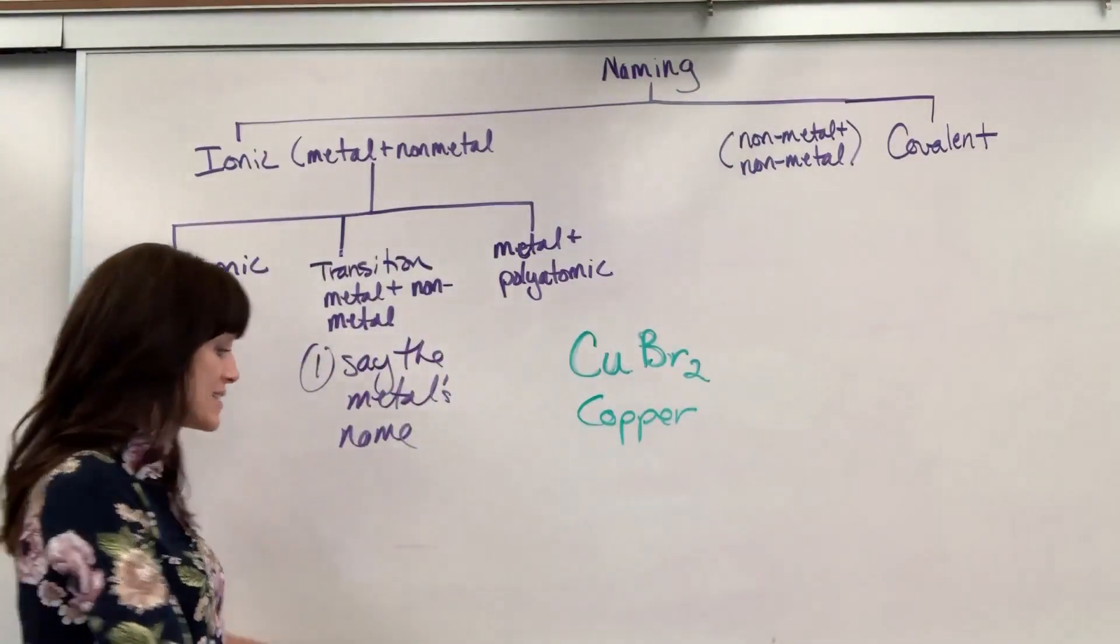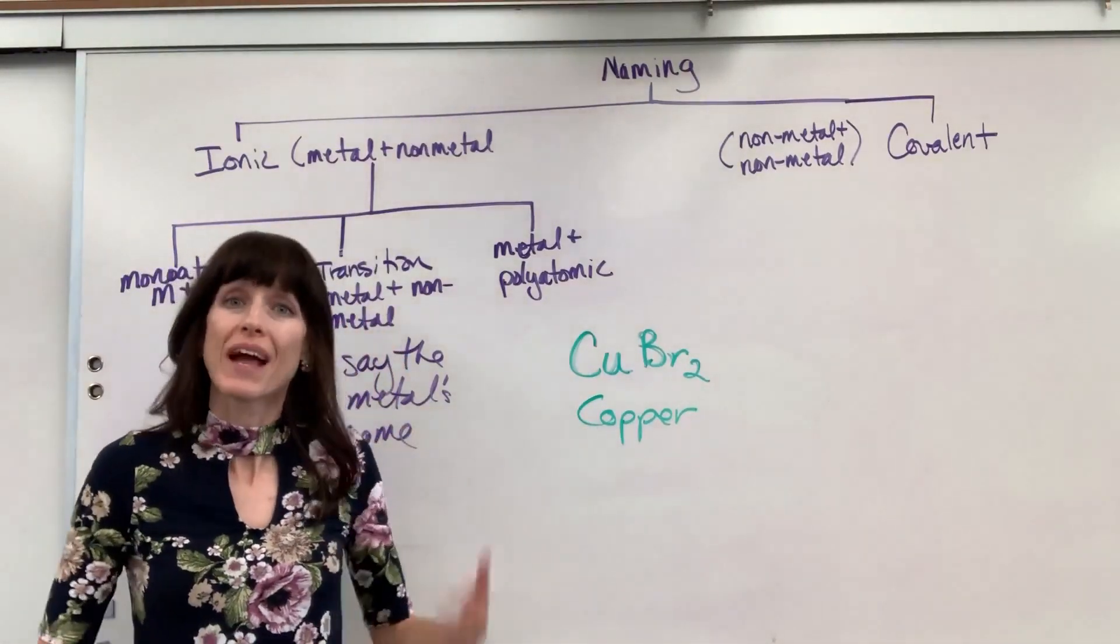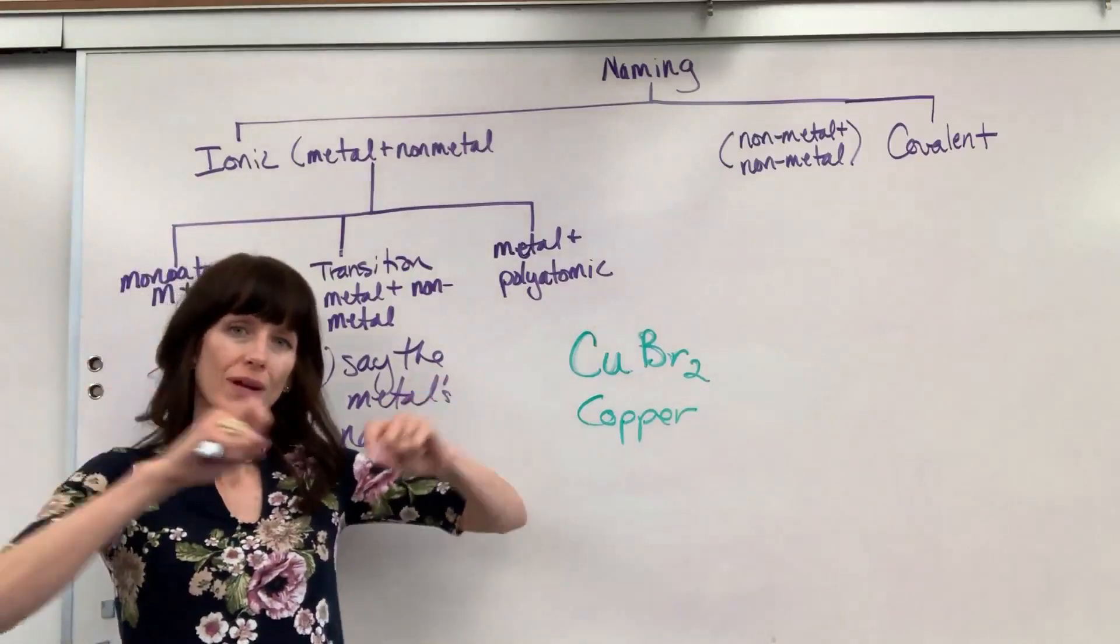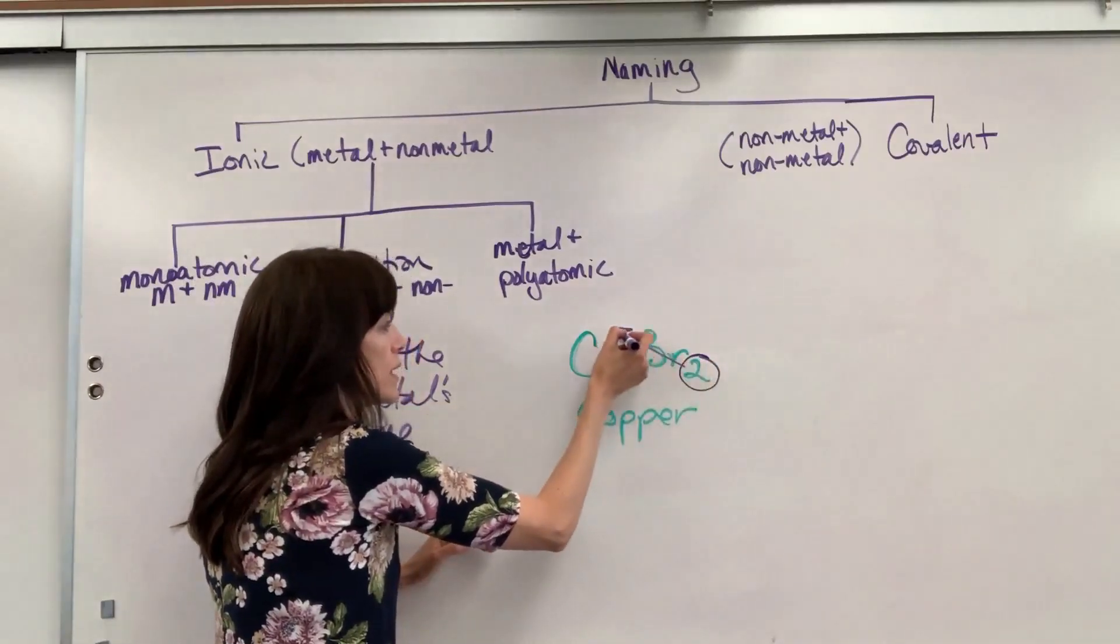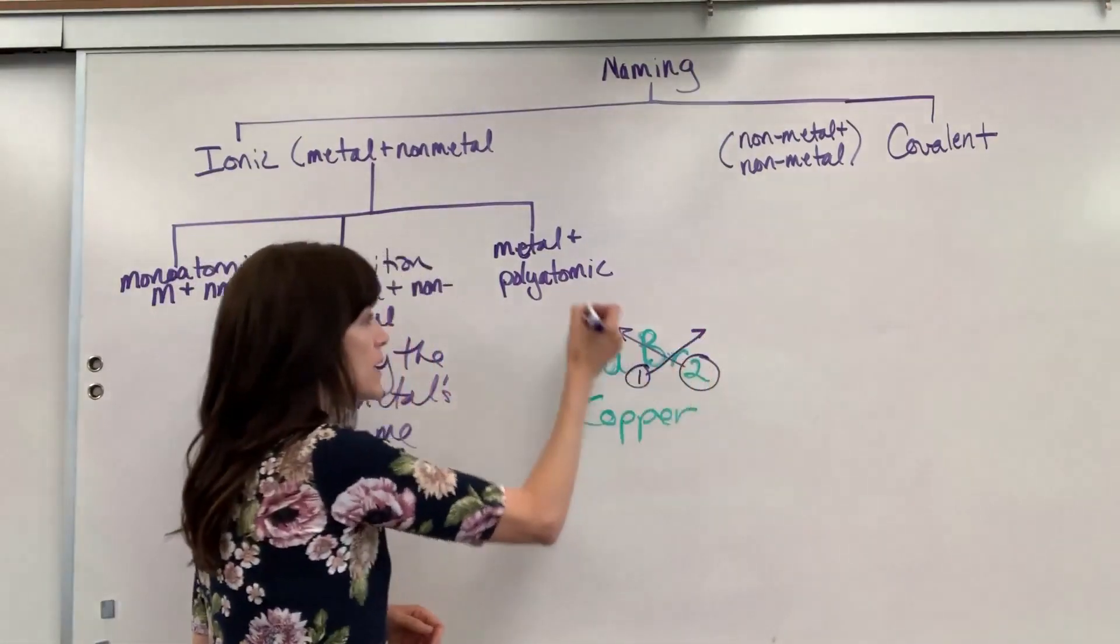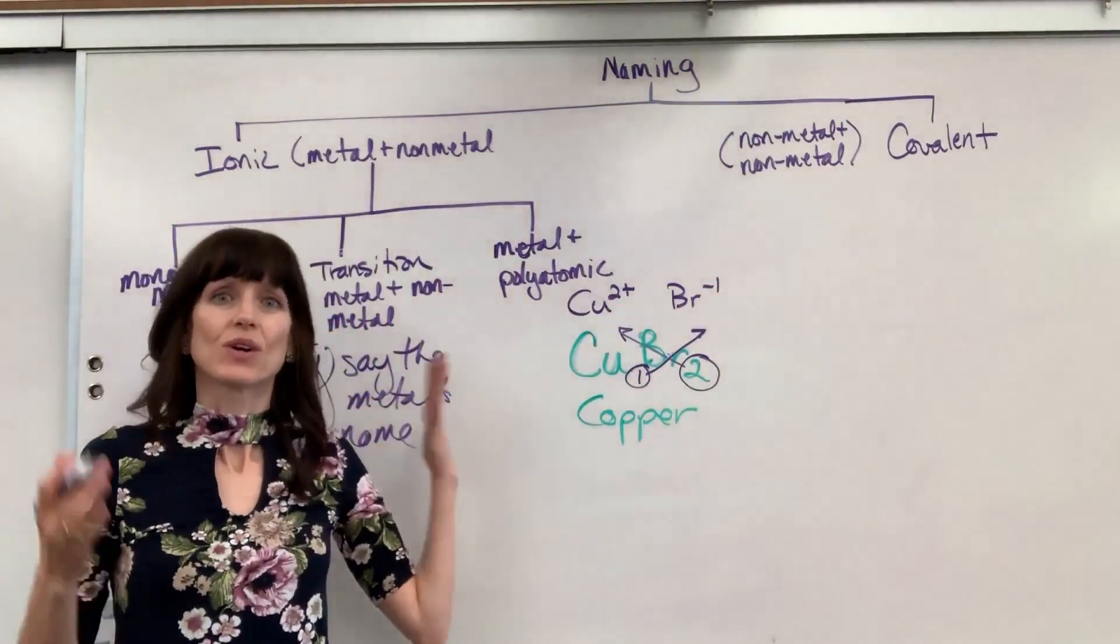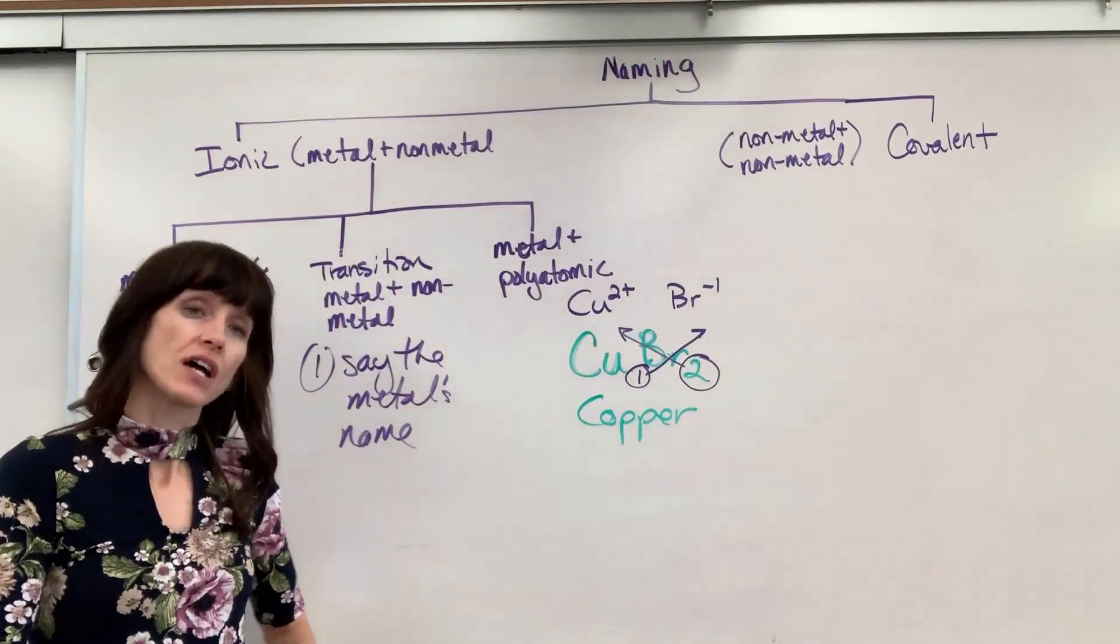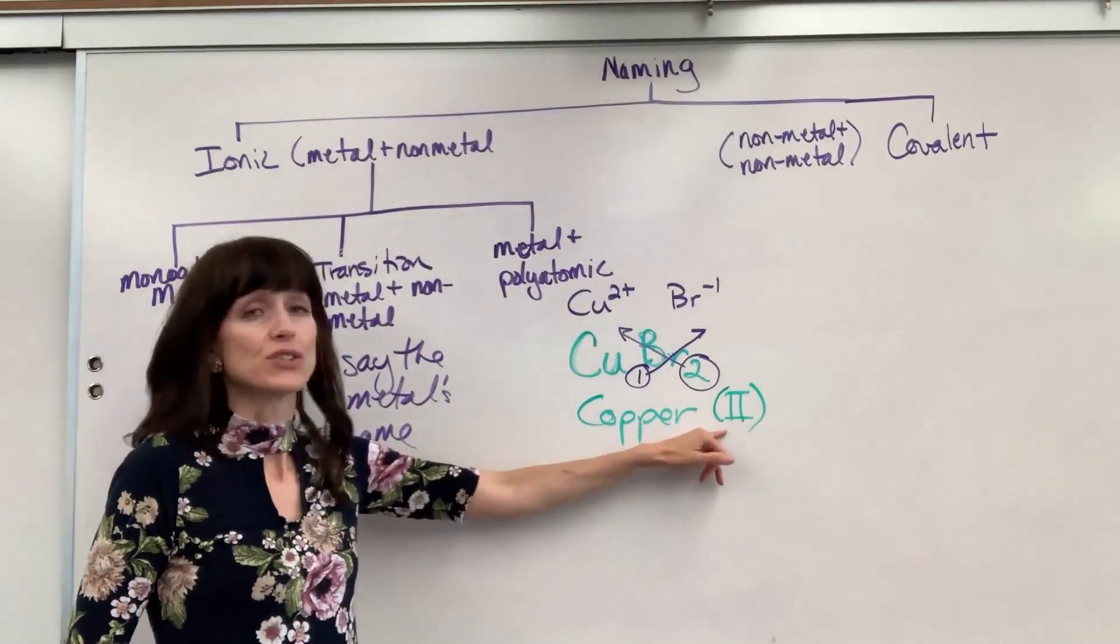Now, second step - this is the new step. Transition metals can have different charges, and we have to tell the reader what was the original charge on that copper ion. To do this, we're going to cross the charges back up like I just showed you. I'm going to take that 2, pull that up here. There's understood to be a 1 subscript on the copper. Pull that to the bromine, which means it was originally Cu2+ and Br-. The copper was a +2 charge. The way you write this is with Roman numerals - it's called the stock system. You'll say copper II, and that tells the reader this has a 2+ charge.